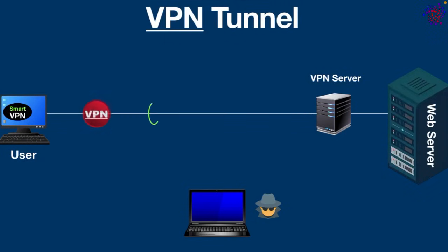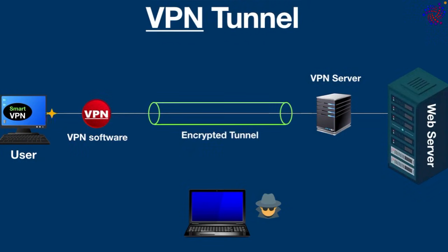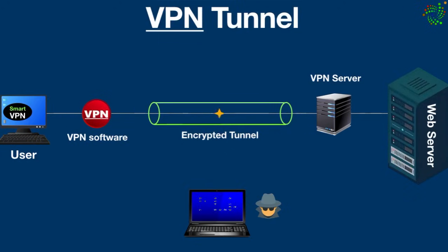However, when you connect to the internet with a VPN, your data packets go through an encrypted and secure tunnel. This protects your browsing activity, masks your IP address, and redirects your data to a VPN server. You can also remotely access your data in a safe way. Neither ISPs nor hackers can identify you or track your location. A VPN tunnel is one of the most useful online security technologies available.